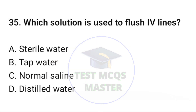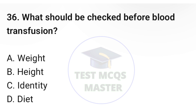Question number thirty-five: Which solution is used to flush IV lines? The correct option is C: normal saline. Question number thirty-six: What should be checked before blood transfusion? The correct option is C: identity.